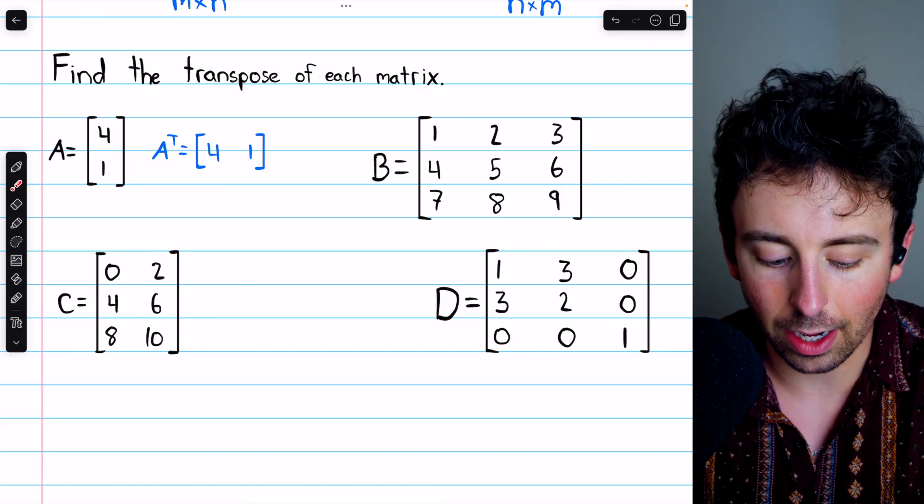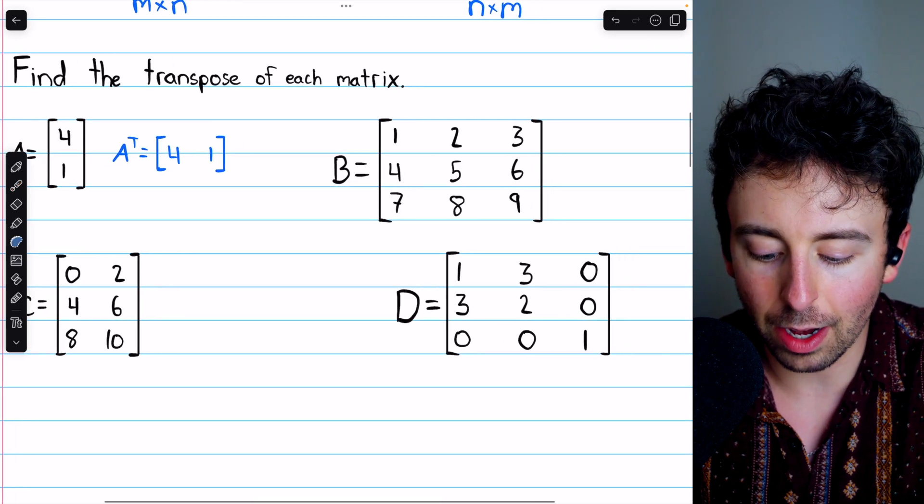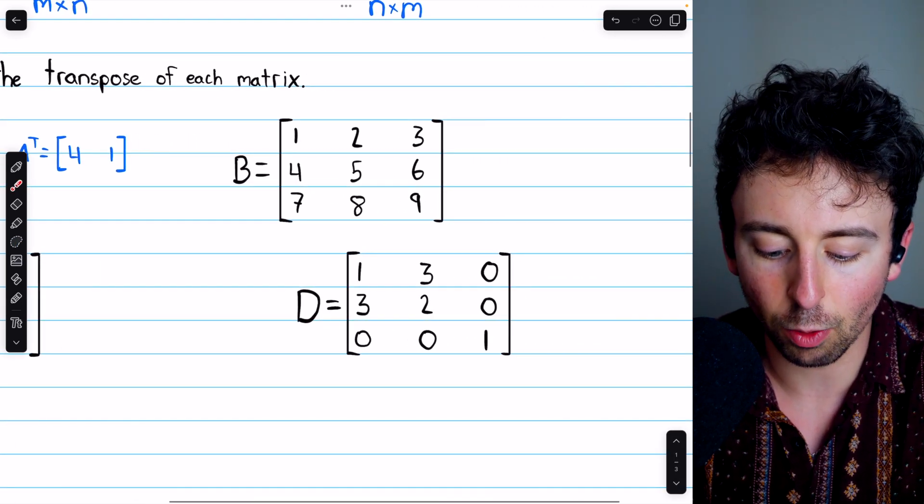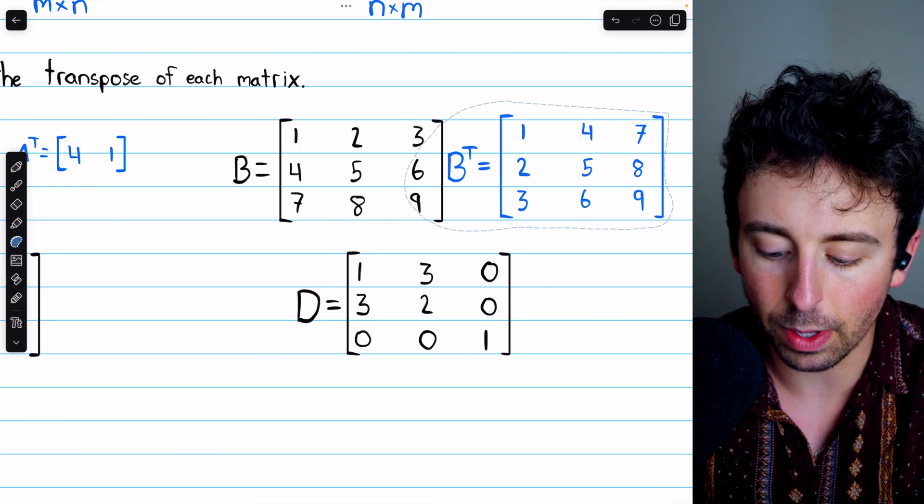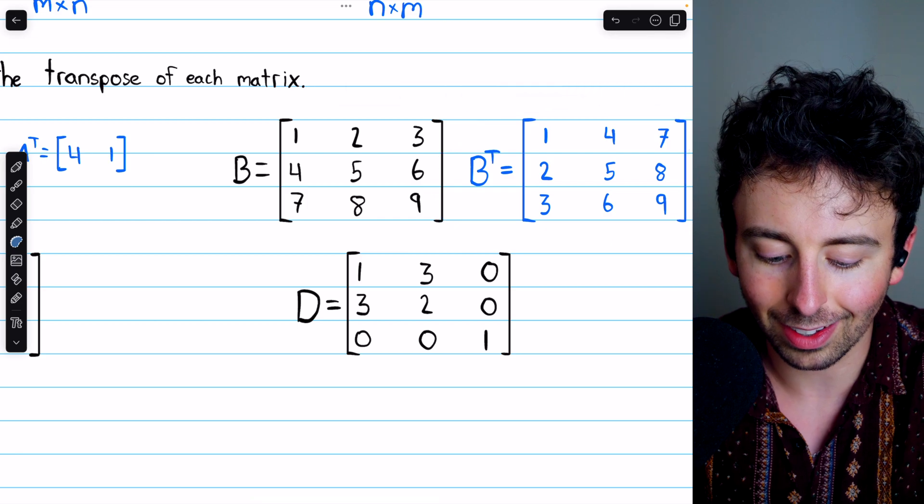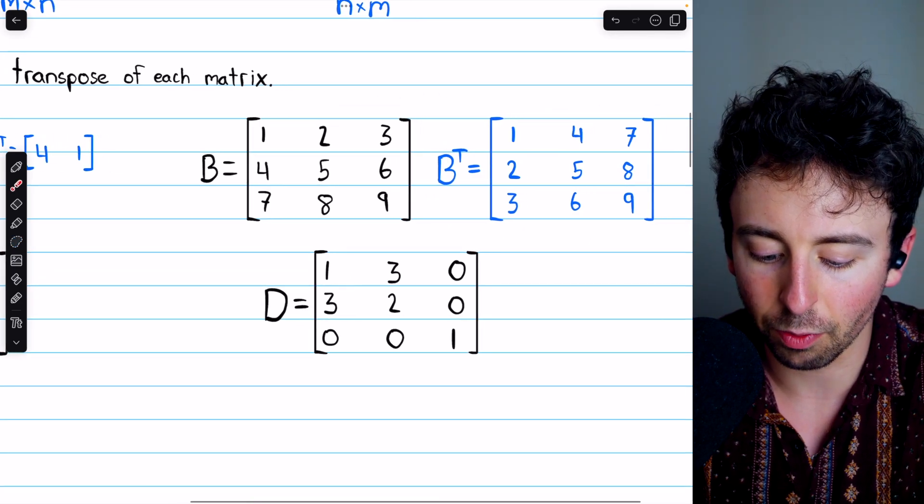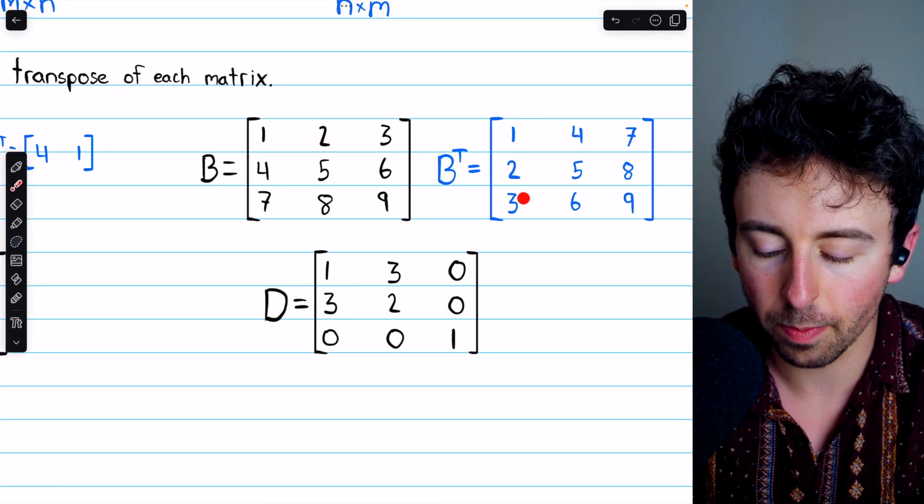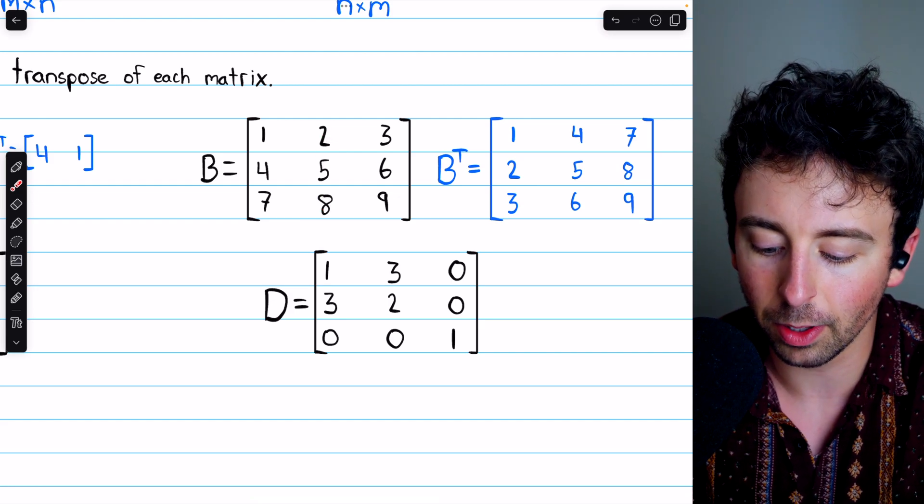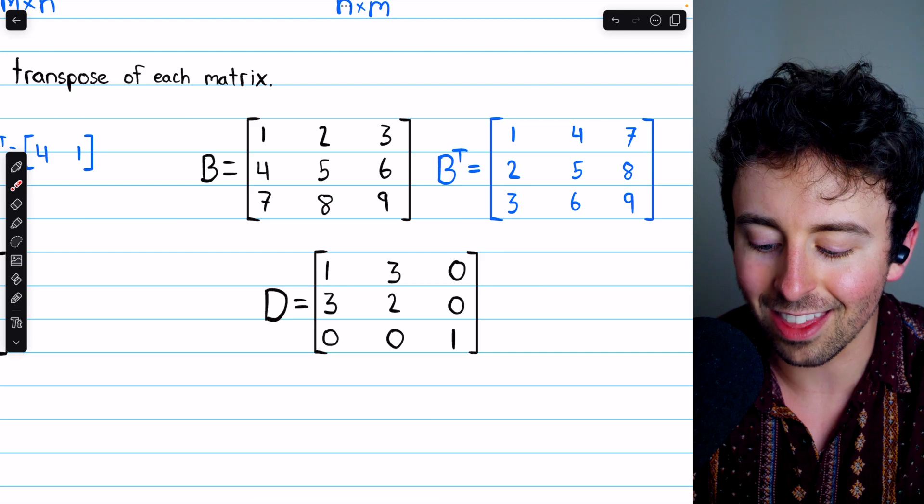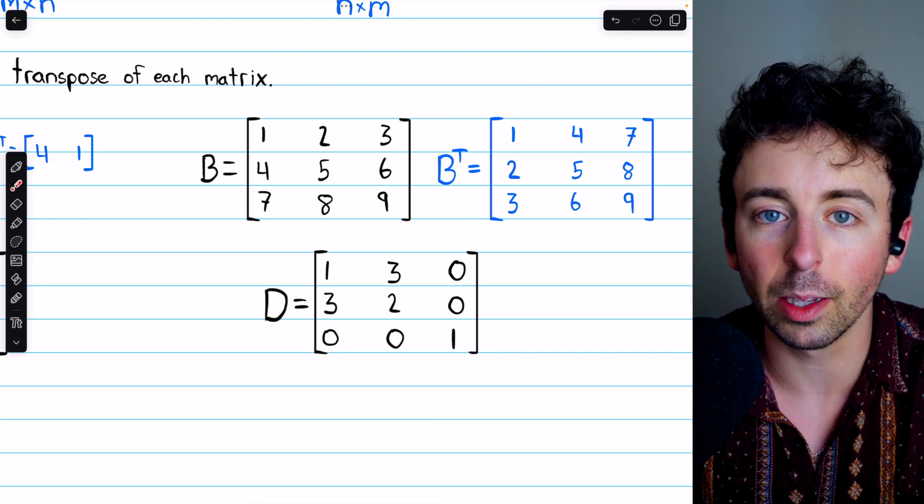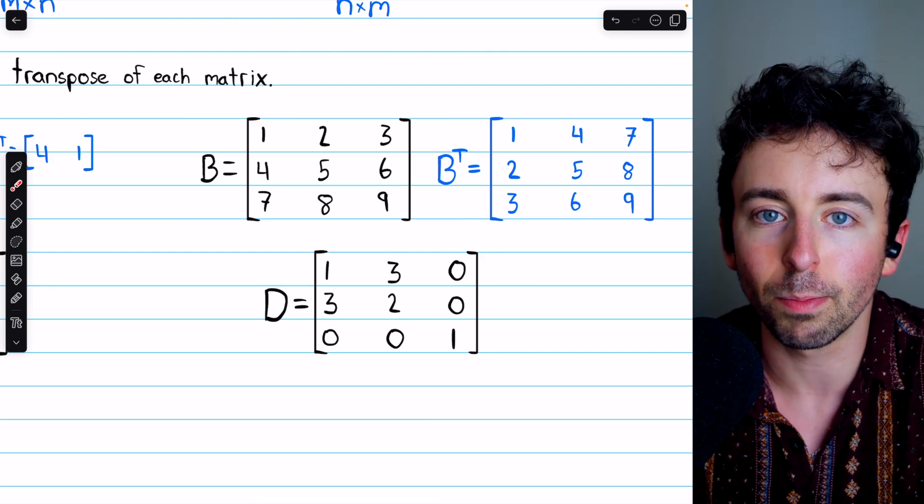Now what about B and B transpose? To find B transpose, we take the rows of B and use those to construct the columns of B transpose, which looks like that. You can see this first row as the first column. You can see this second column, for example, as the second row. You can see this third row as the third column. The rows and columns have swapped. That's how we find B transpose.